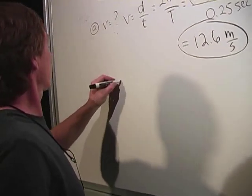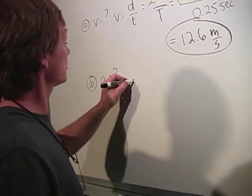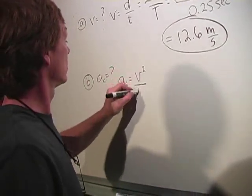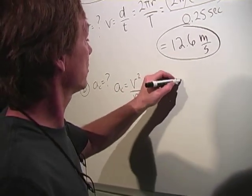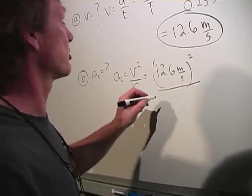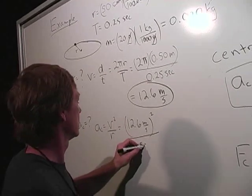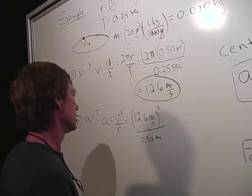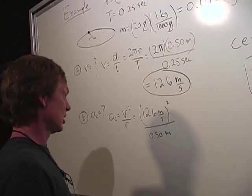What's the centripetal acceleration? Centripetal acceleration, if we're using velocity, we use this equation, v squared over the radius. That's 12.6 meters per second, but it's squared divided by the radius, which is about half a meter. So that's going to be around 300.